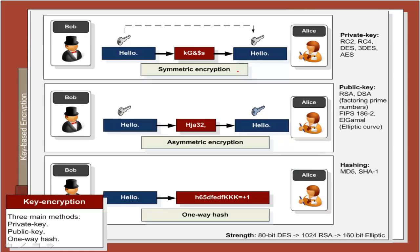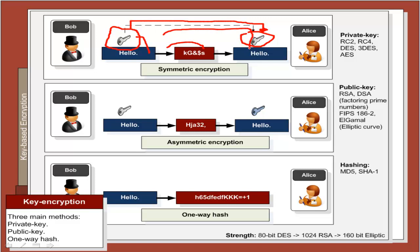There are three main types of encryption. The first type is symmetric encryption, where both Bob and Alice use the same shared secret key to encrypt and decrypt. Bob takes a message, encrypts it with one key, sends it, and then Alice decrypts with the same key. Methods include RC2, RC4, DES, 3DES, and AES.